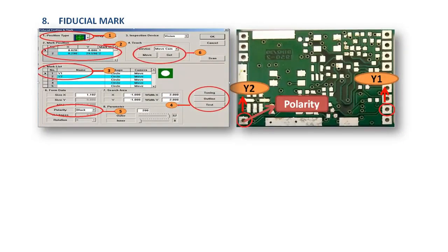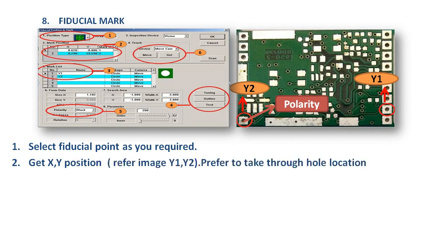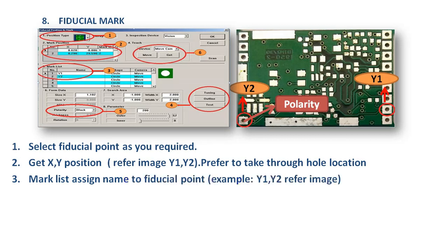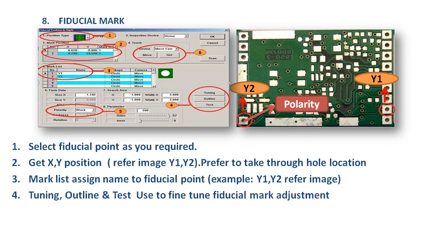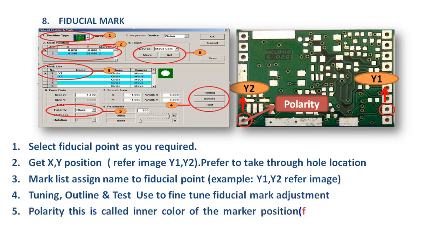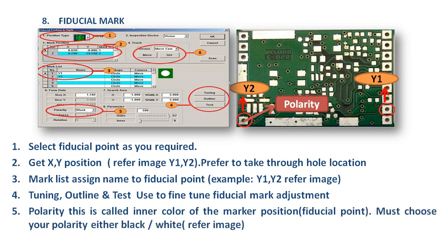First, select fiducial point as required. Second, get X, Y position — refer image Y1, Y2; prefer to take through-hole location. Third, mark list: assign name to fiducial point (example: Y1, Y2 — refer image). Fourth, tuning outline and test: used to fine-tune fiducial mark adjustment. Fifth, polarity: this is the inner color of the marker position fiducial point — must choose polarity either black or white (refer image). Sixth, teach: manual teaching X, Y position.